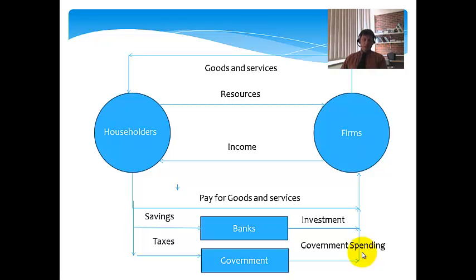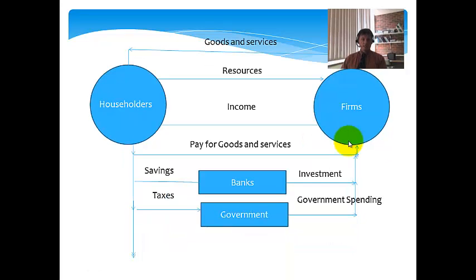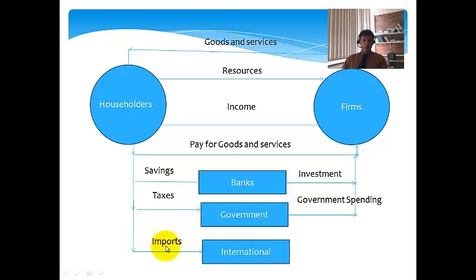Now, the most realistic representation is to include the final sector, the international sector. We're obviously living in a very globalised world and we deal more and more on an international scale. So, householders, when they buy goods and services from overseas destinations, we class that as imports. And similarly, when our businesses sell goods and services to overseas customers, they're classed as exports.